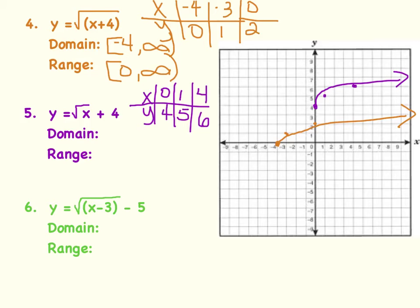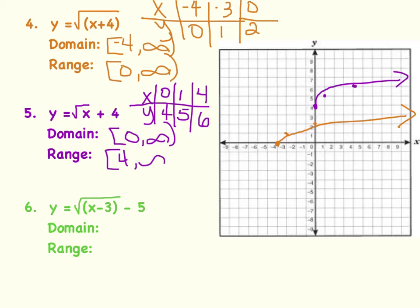Comparing this curve to the parent curve, I don't see a left or right shift — the starting point has shifted 4 units up. This shift does not affect the domain, which is still from 0 to infinity. However, it does affect the range. The y coordinate of the starting point is now 4, so the range is from 4 to infinity.